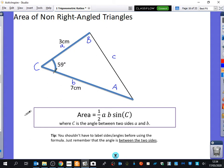That's really how I remember this. So I've said here as a tip, you shouldn't have to label the sides and angles before using the formula. Just remember that the angle is between the two lines. So really easily for this one, the area is just a half times 3 times 7 times the sine of 59 degrees, which is 9.00 centimetres squared. And by writing 9.00 centimetres squared, I'm telling you that it's been rounded. It's not exactly 9, but actually it happens to be 9 to two decimal places.